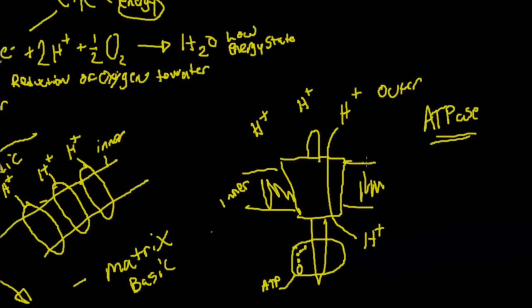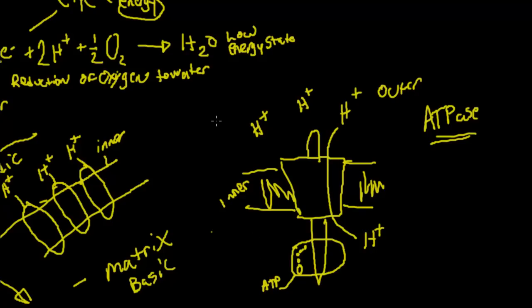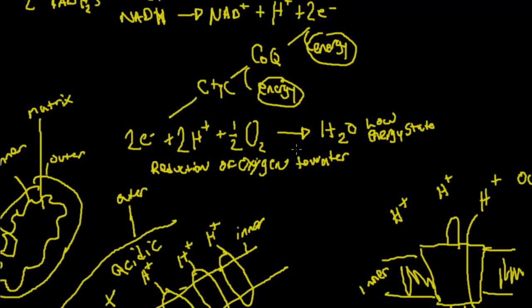Well these hydrogens want to get back into the matrix. But the only way to do that is to use another protein complex which is ATPase. And so they come through and they flow through. And as they flow through they cause it to spin. And as they cause it to spin they help bind ADP back to another phosphate group creating ATP. So that's how the electron transport chain works.